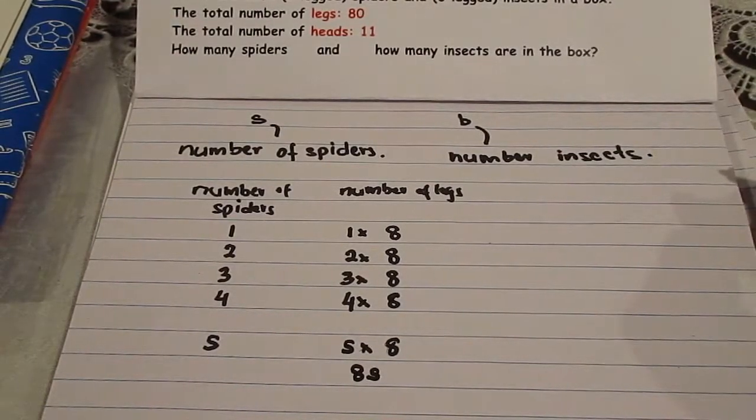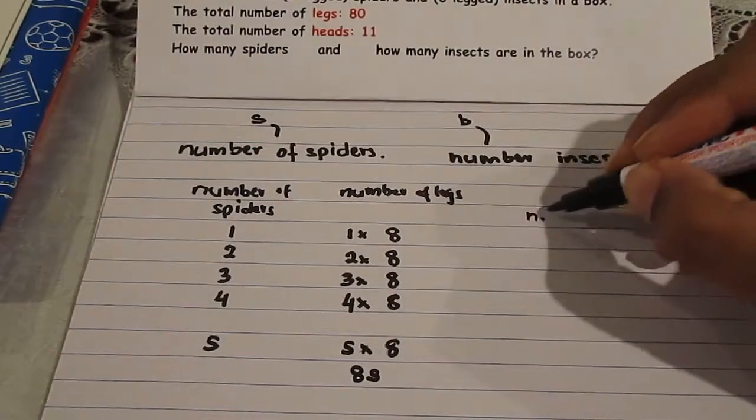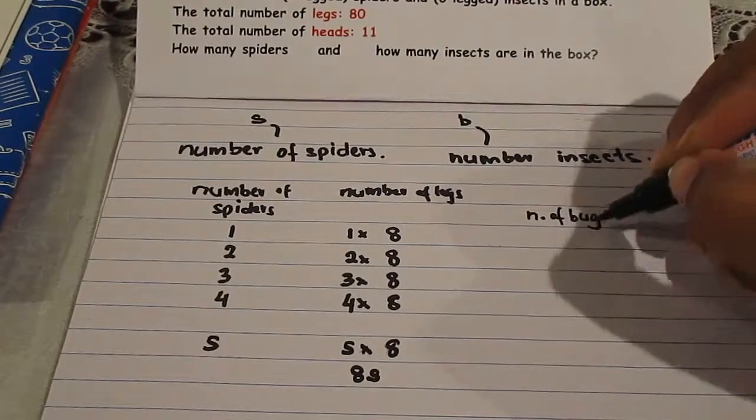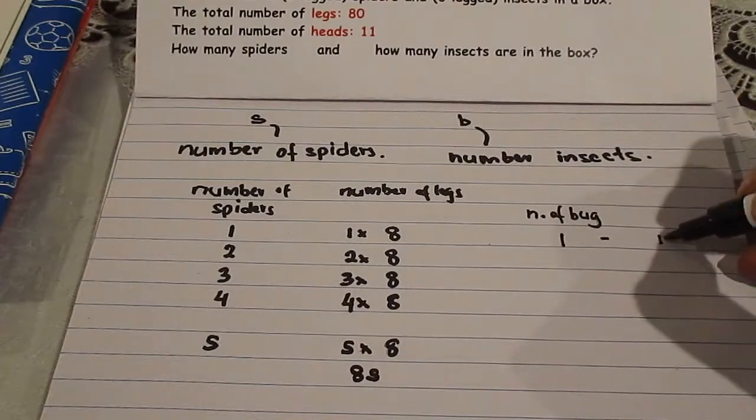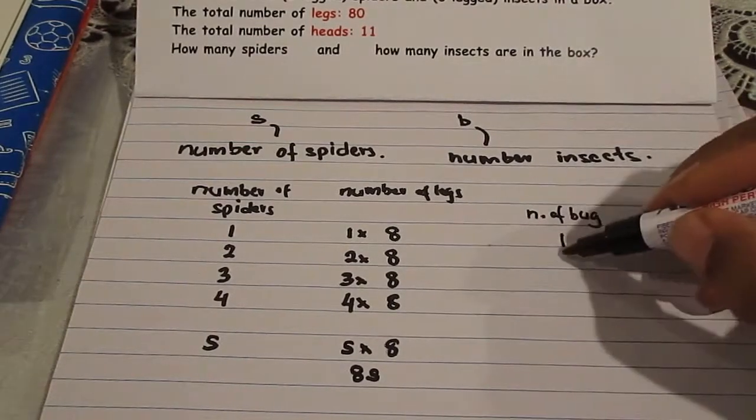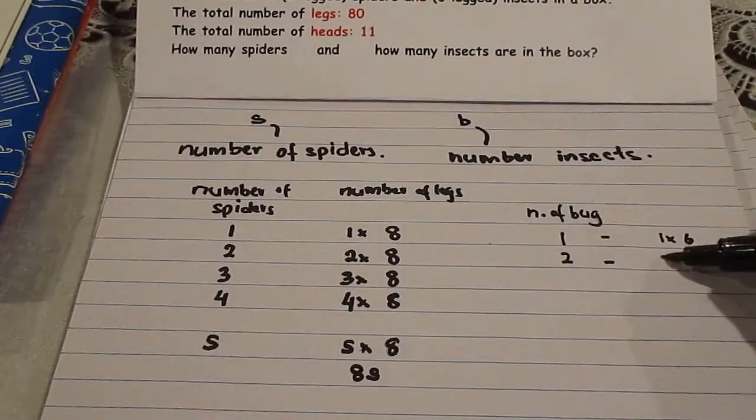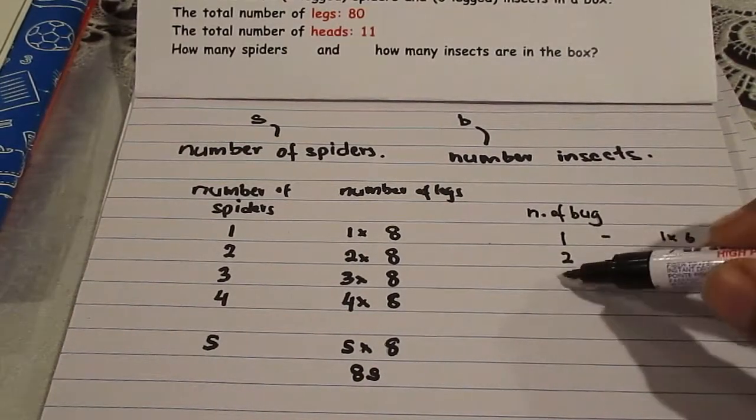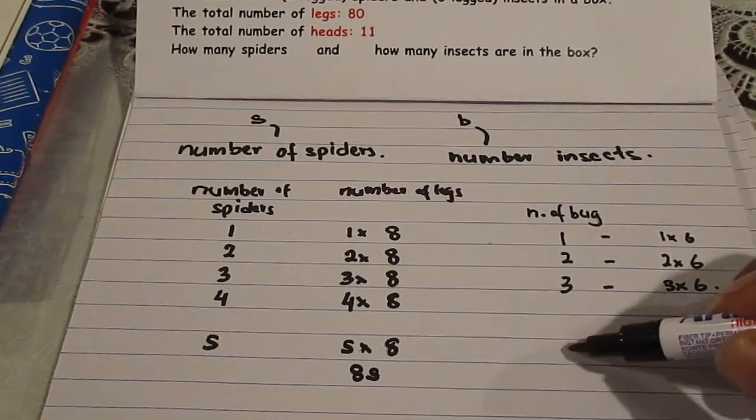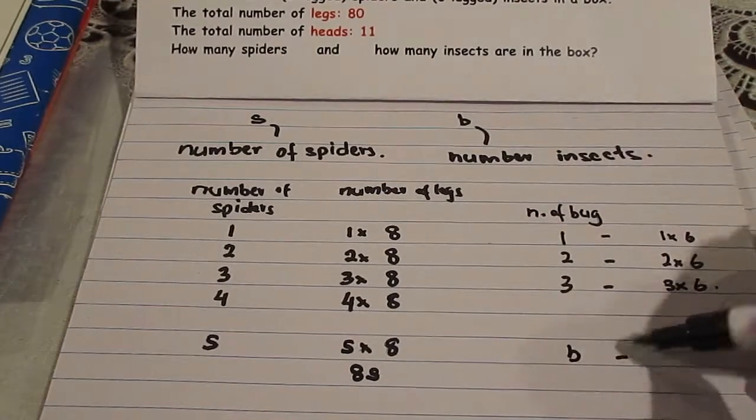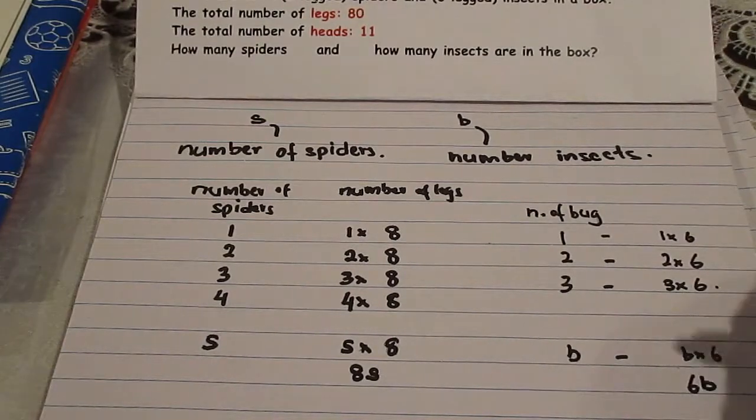Similarly, if you take the bugs or the insects and say the number of bugs and r b will be here. One bug has six legs. Two bugs have two into six legs. Three bugs have three into six legs. Therefore b number of bugs will have b into six, which can also be written as 6b legs.